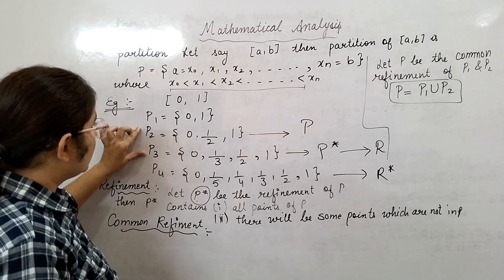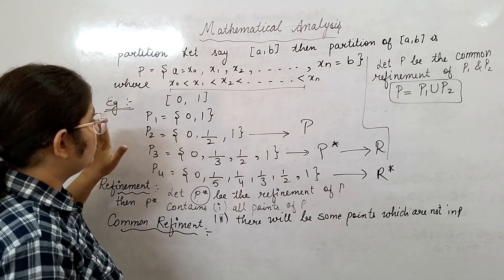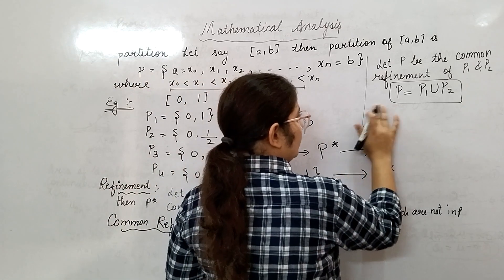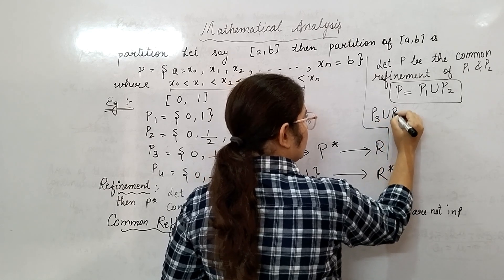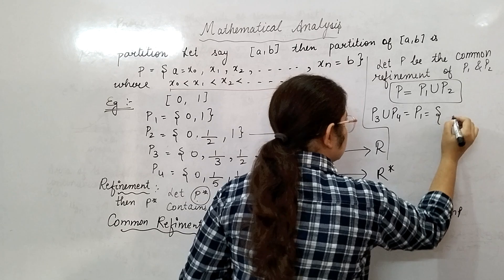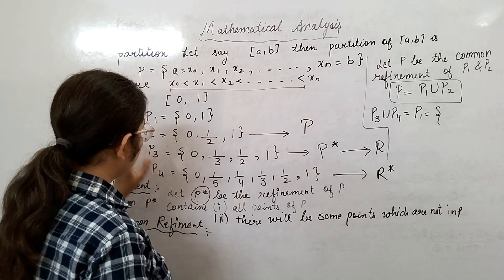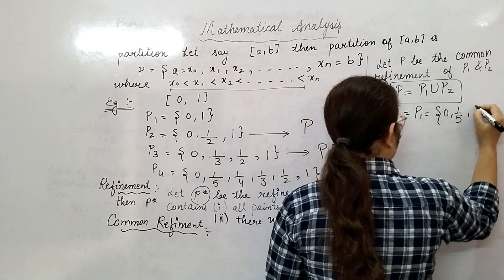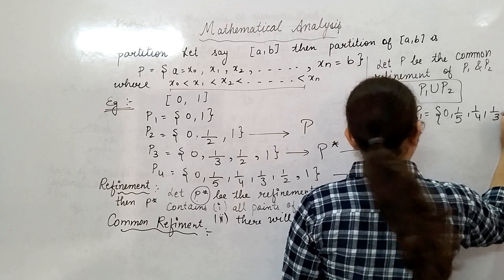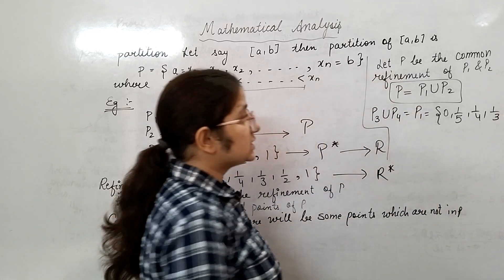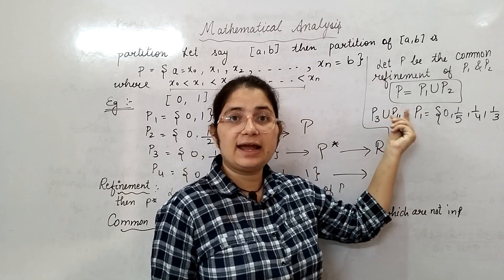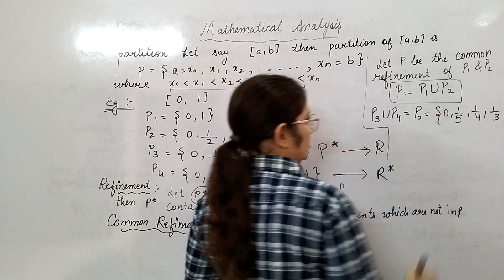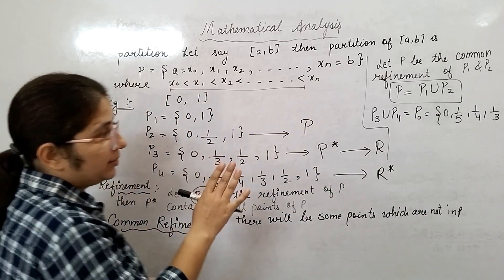For example, say I want to write down the common refinement of P₃ and P₄. The common refinement is P₃ ∪ P₄. Say it is P₀. Then the common refinement will be: {0, 1/5, 1/4, 1/3, 1/2, 1}. So this will be the common refinement of the P₃ and P₄ partitions. So this is about common refinement.